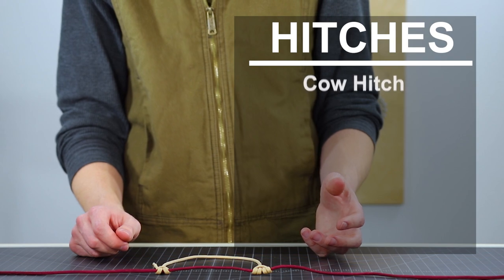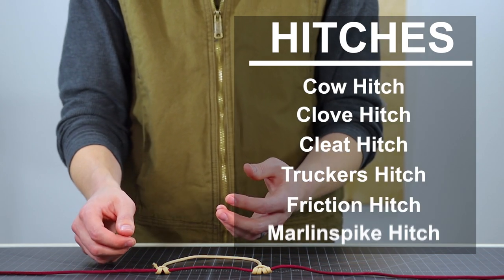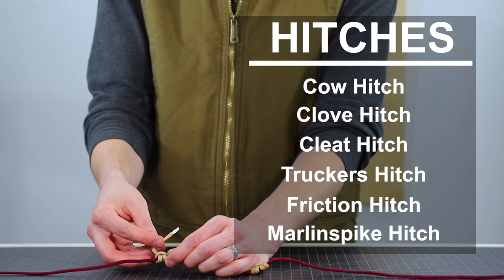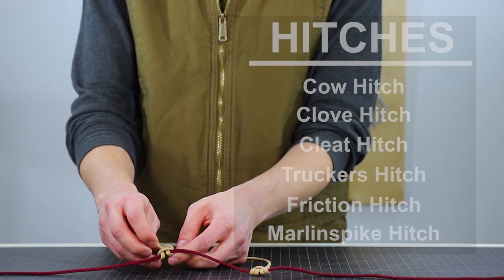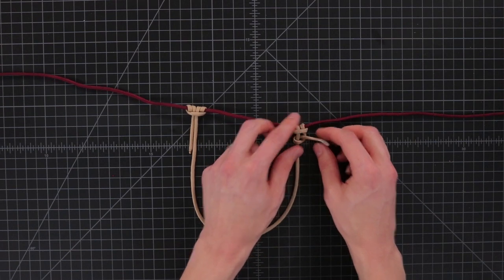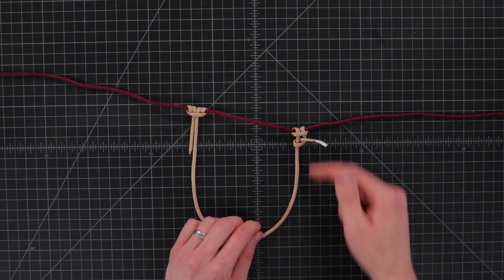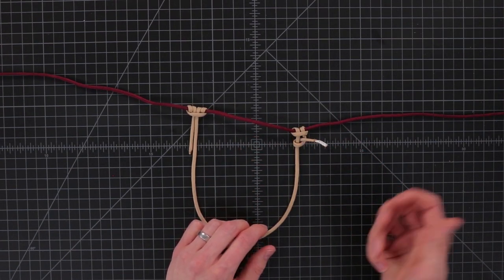There's one more kind of hitch I'd like to go over and that's just a simple half hitch. Half hitches are often added to an existing knot just to keep the tail end from sliding out. They're often tied two or three of them in a row just to make a knot more secure.